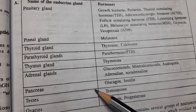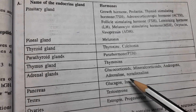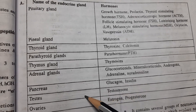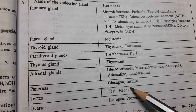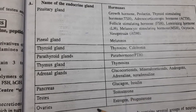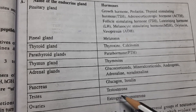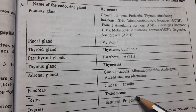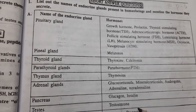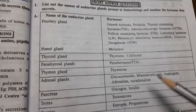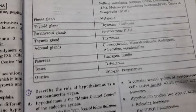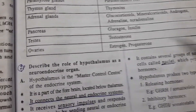Pancreas secretes glucagon and insulin. Testes secrete testosterone. Ovaries secrete estrogen and progesterone. This completes the first 4-mark question.